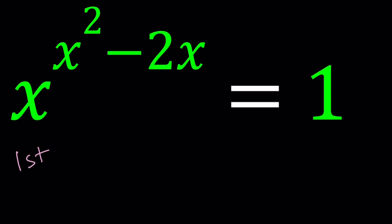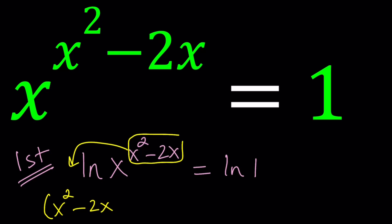First method, I'd like to use the natural log. Let's go ahead and ln both sides. And we're looking for real solutions. If you have some time left, maybe we can also talk about complex solutions. Now, let's bring this to the front, and that's going to give us x squared minus 2x multiplied by lnx.